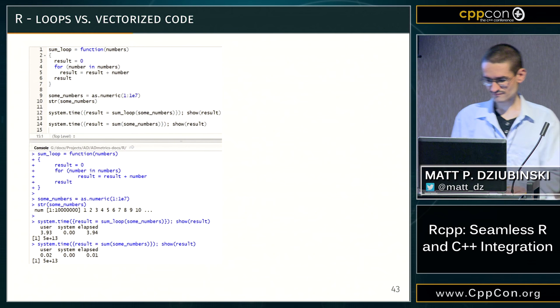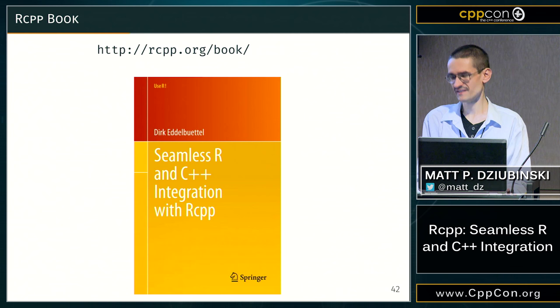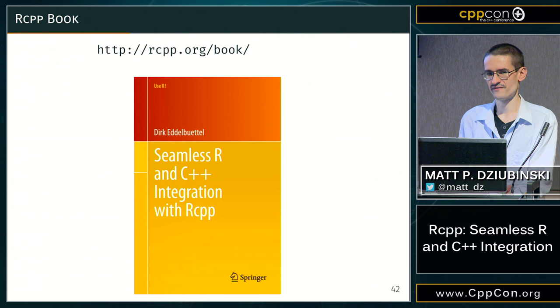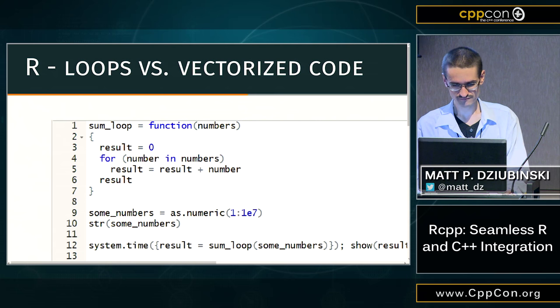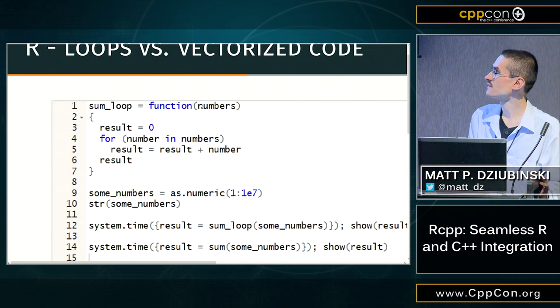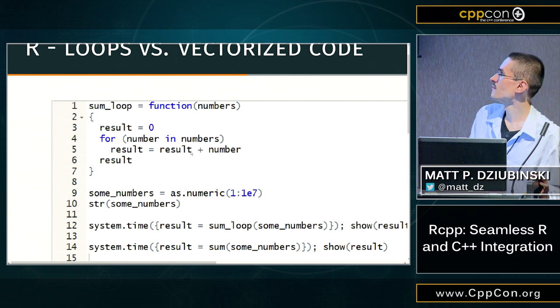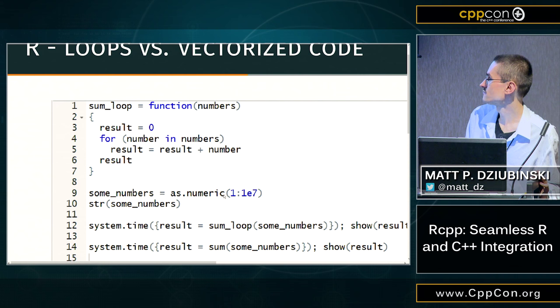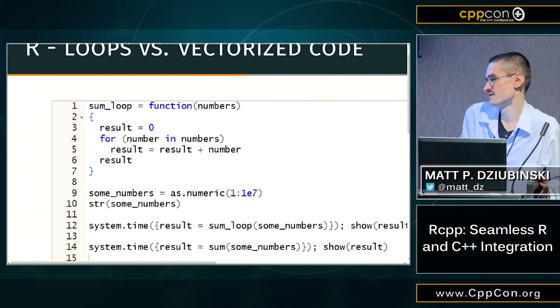We are programmers, so we know there is no perfect — only trade-offs. Here's one: suppose you'd like to sum a bunch of numbers. In R you'd write a function, take numbers as input, initialize a result counter to zero, iterate through each number, update the result and return it. Let's try this with a million numbers. We time our function called sum_loop and compare it to the built-in sum function in R, which actually calls a C API implementation.